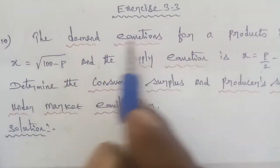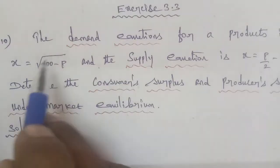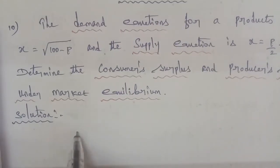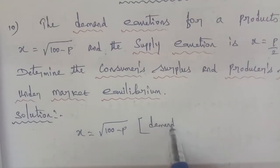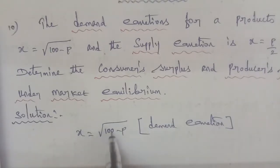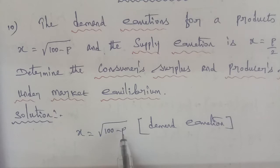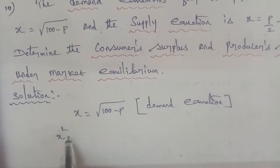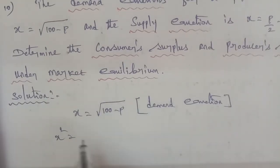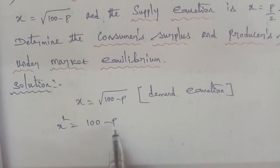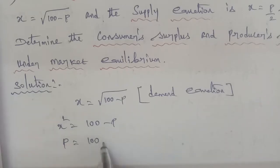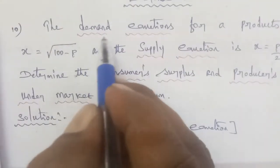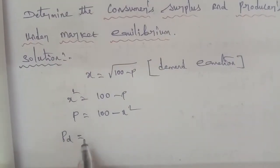The demand equation is X is equal to square root of 100 minus P. To express P in terms of X, we remove the square root by squaring both sides: X squared equals 100 minus P. Therefore the demand equation in terms of P is: Pd equals 100 minus X squared.